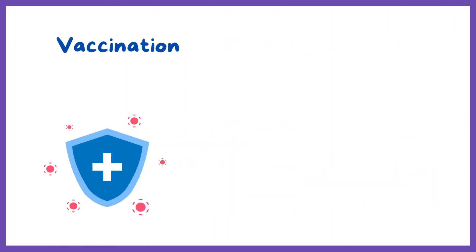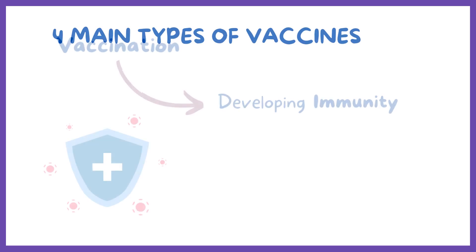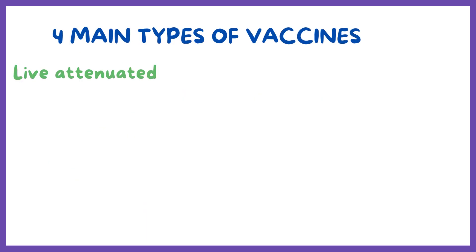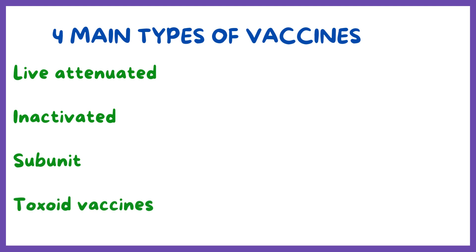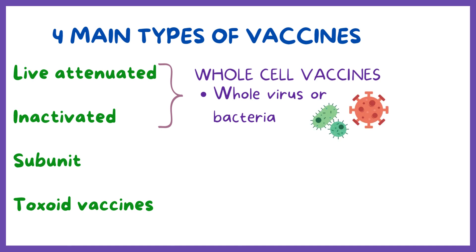Vaccination is an active process of developing immunity. There are four main types of vaccines: live attenuated, inactivated, subunit, and toxoid vaccines. Live attenuated and inactivated vaccines are whole cell vaccines, which means that the whole virus or bacteria is used to create the vaccine.